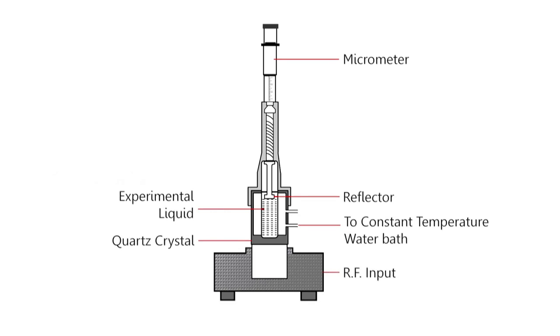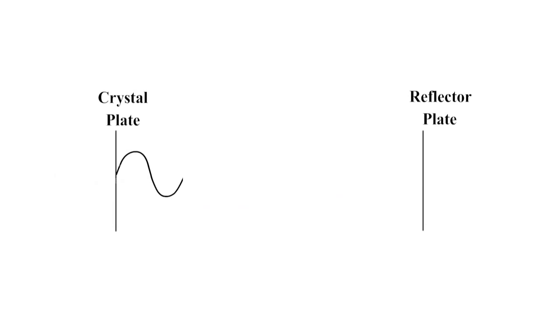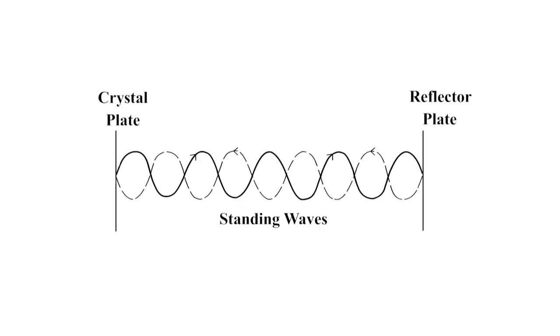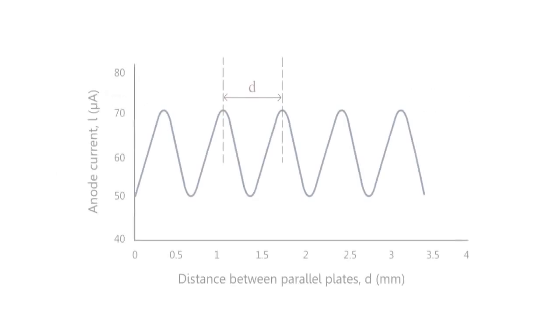At this point, acoustic resonance occurs and this gives rise to an electrical reaction on the generator driving the quartz plate. Now the anode current of the generator becomes maximum. If we increase or decrease the distance and the variation is exactly one half of the wavelength, that is λ/2 or its multiple, the anode current again becomes maximum.